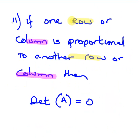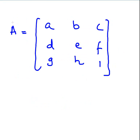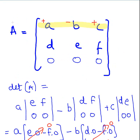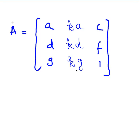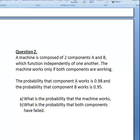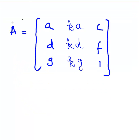The second proof: if one column or row is proportional to another column or row. What I'm going to do here is replace the middle column and make it K times the first column — so KA, KD, and KG. This is going to take a bit more work. Let's calculate the determinant of A.